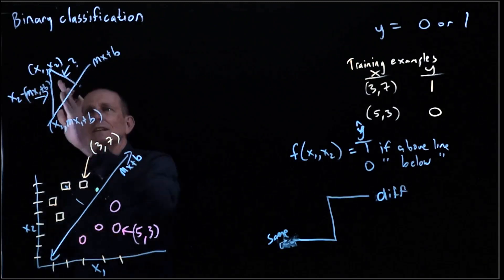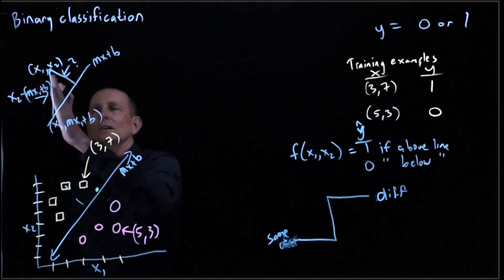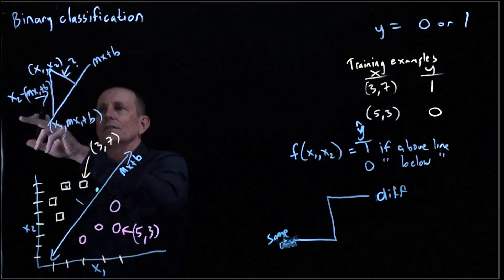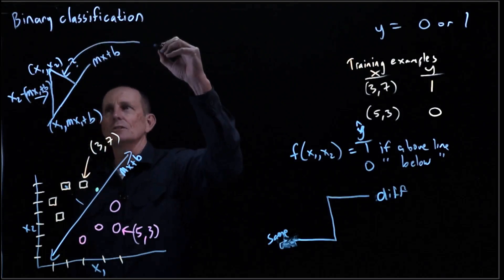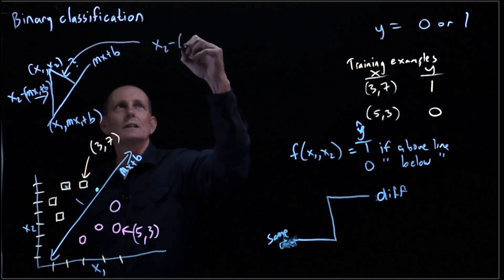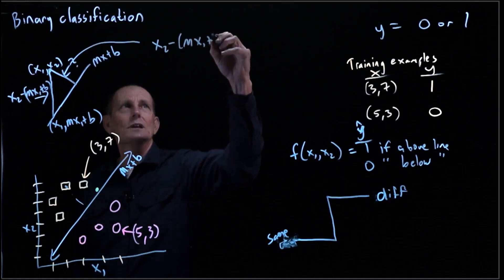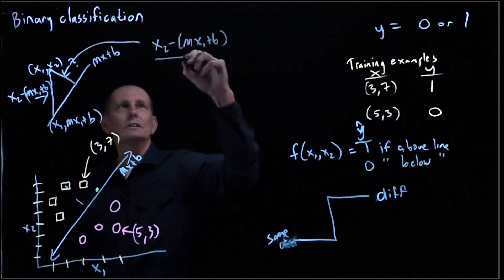So this distance is some smaller factor of this distance here. And if we look at this, the actual solution to this is x2 minus mx plus b over